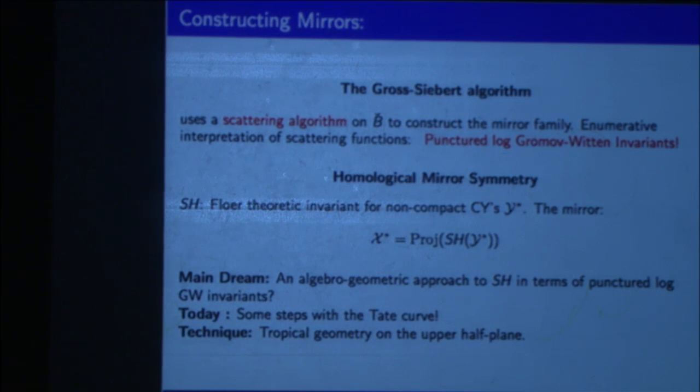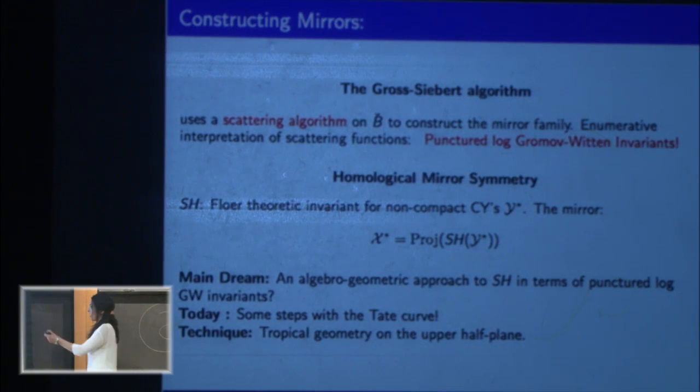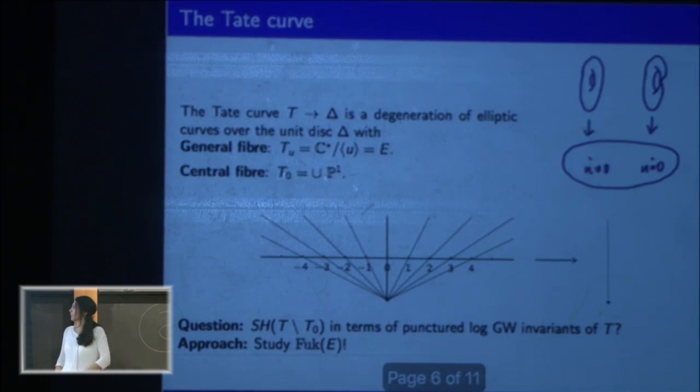And the main dream what we had is we wanted to provide an algebraic geometric approach to the symplectic cohomology ring in terms of punctured log Gromov-Witten invariants. And we took some steps with the Tate curve. We tried to do it for the Tate curve, and the main technique uses a lot of tropical geometry. And this was the main question in my thesis that I finished under the supervision of Bernd Siebert last month. And this question was proposed by Mohammed Abouzaid and Bernd Siebert to me.